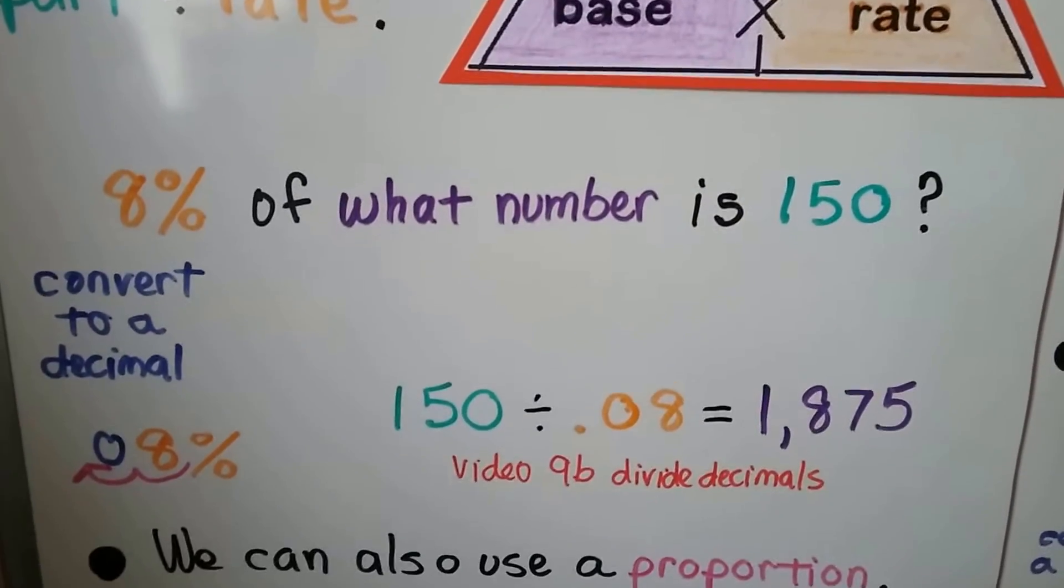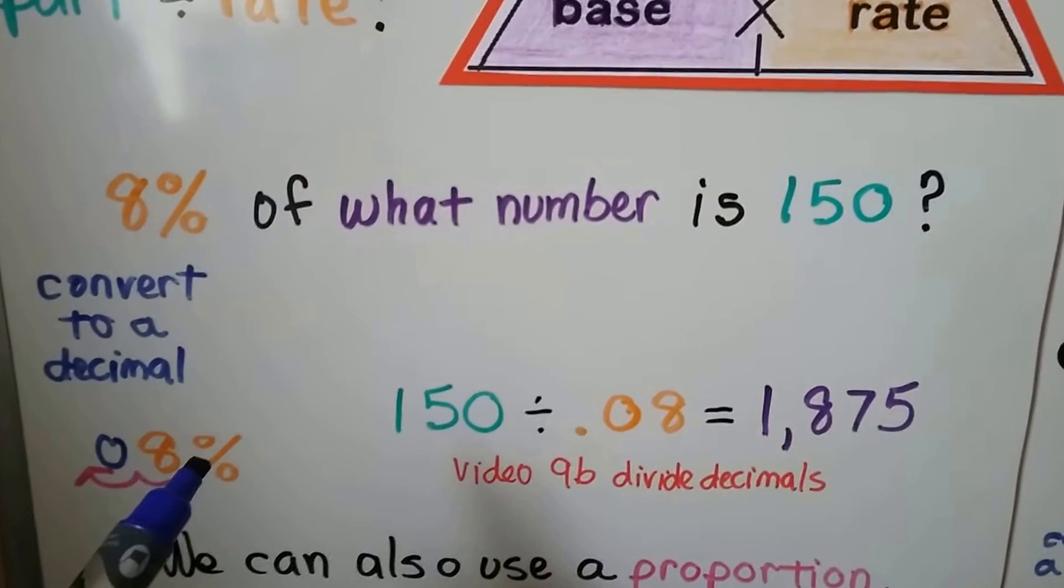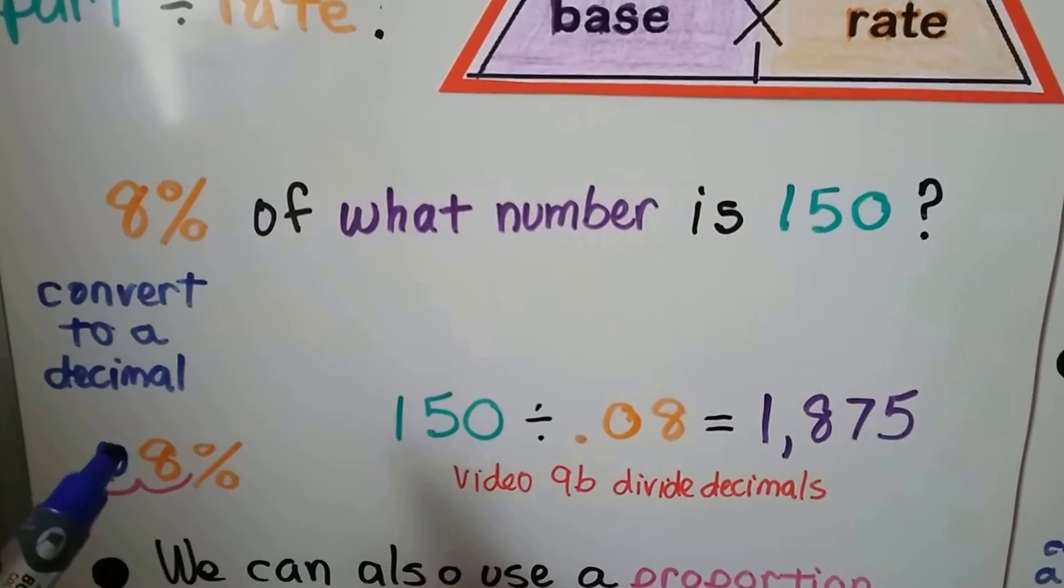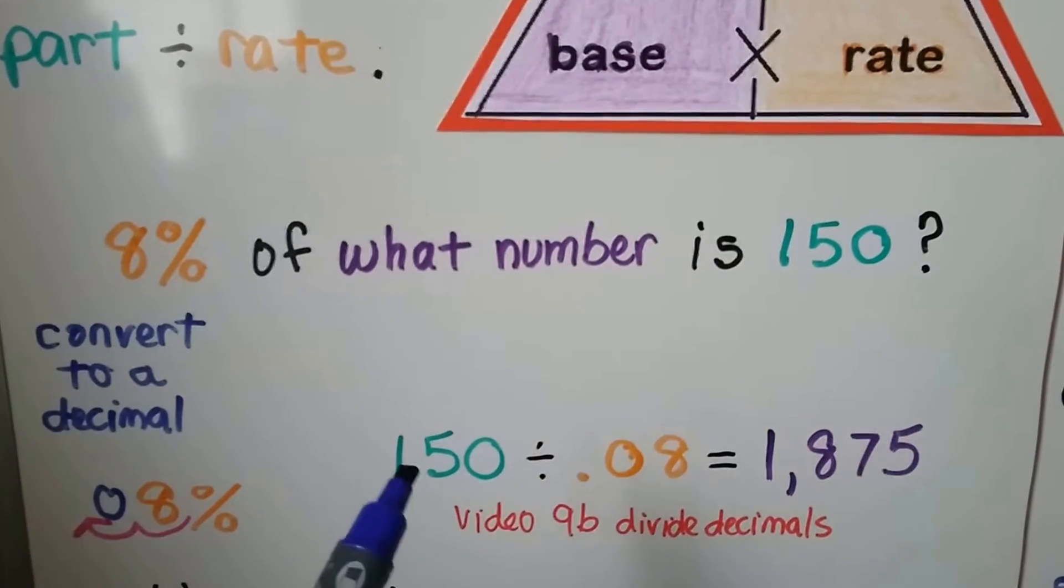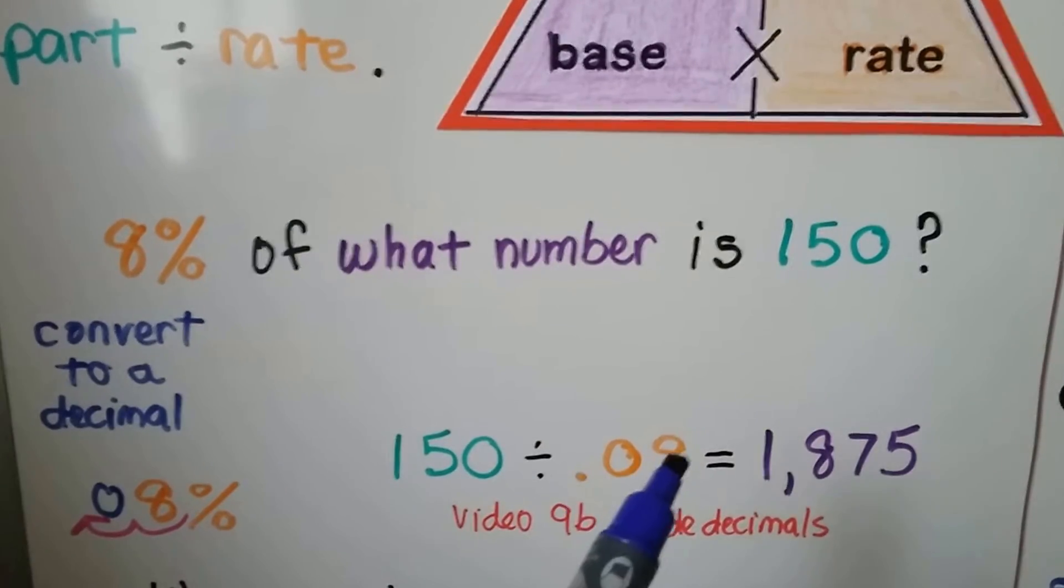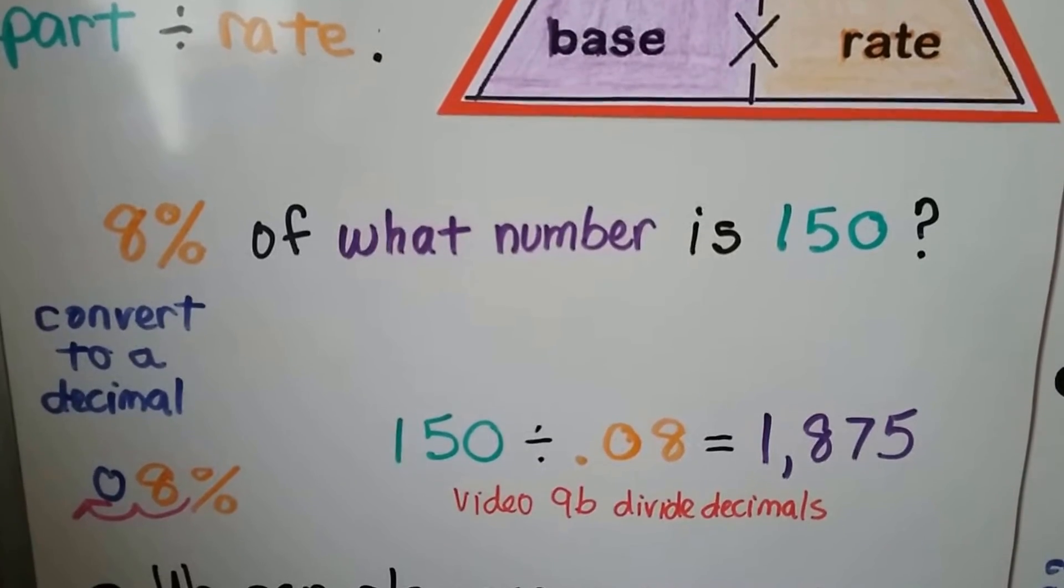8% of what number is 150? We convert the 8% to a decimal. Two hops over and put a zero as a placeholder. And we just divide part divided by rate. 150 divided by .08. It's going to equal 1,875. You can do that quickly on your calculator.